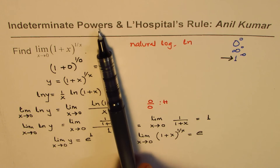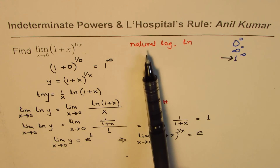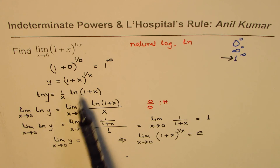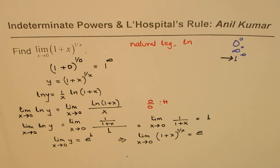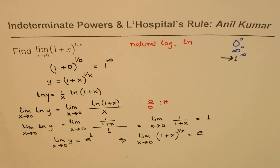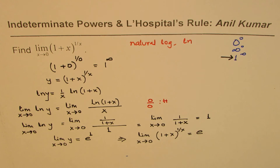To summarize: we have indeterminate powers — substituting x equals zero gave one to the power of infinity. Such questions are solved by taking the natural log on both sides: redefine y as the function, take the natural log, then apply L'Hôpital's rule. When you find that the limit of ln y equals some value, the limit of the function is e to the power of that value. We'll have a couple of examples to practice, one of each kind. This is Anil Kumar — please share and subscribe. Thank you and all the best.